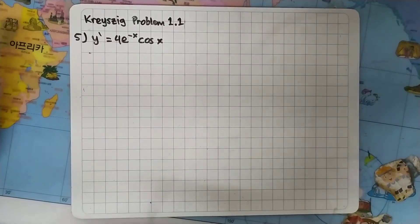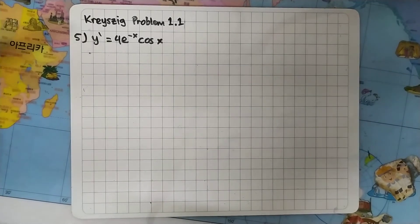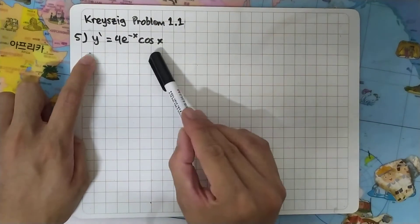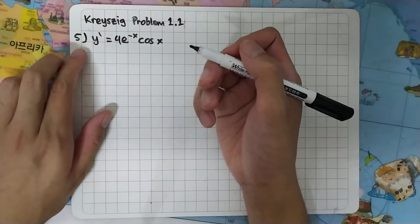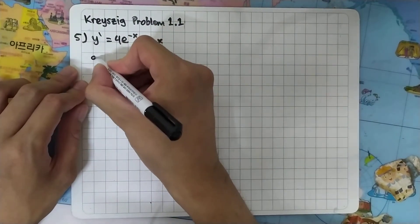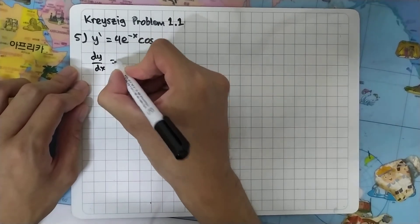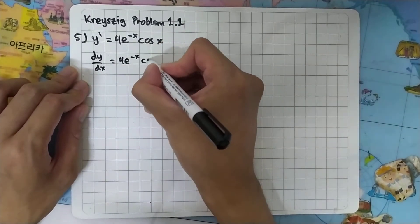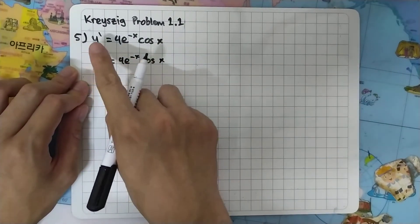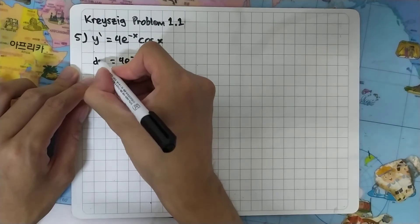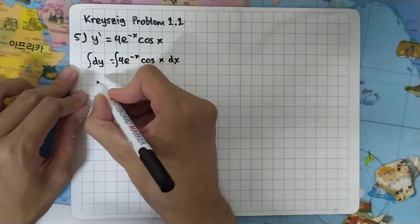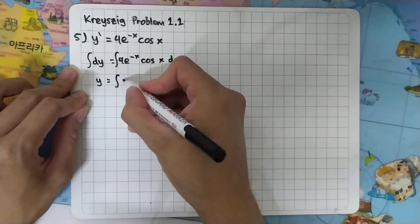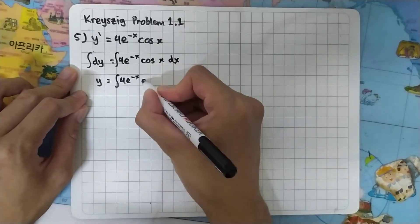We try to solve problem 1.1 question 5 from Kreyszig Advanced Engineering Mathematics. The question is: find the general solution of the differential equation where y prime is equal to 4 e to the minus x cosine x. We rewrite y prime as dy/dx equal to 4 e to the minus x cosine x, and we integrate both sides to get y equal to the integral of 4 e to the minus x cosine x dx.